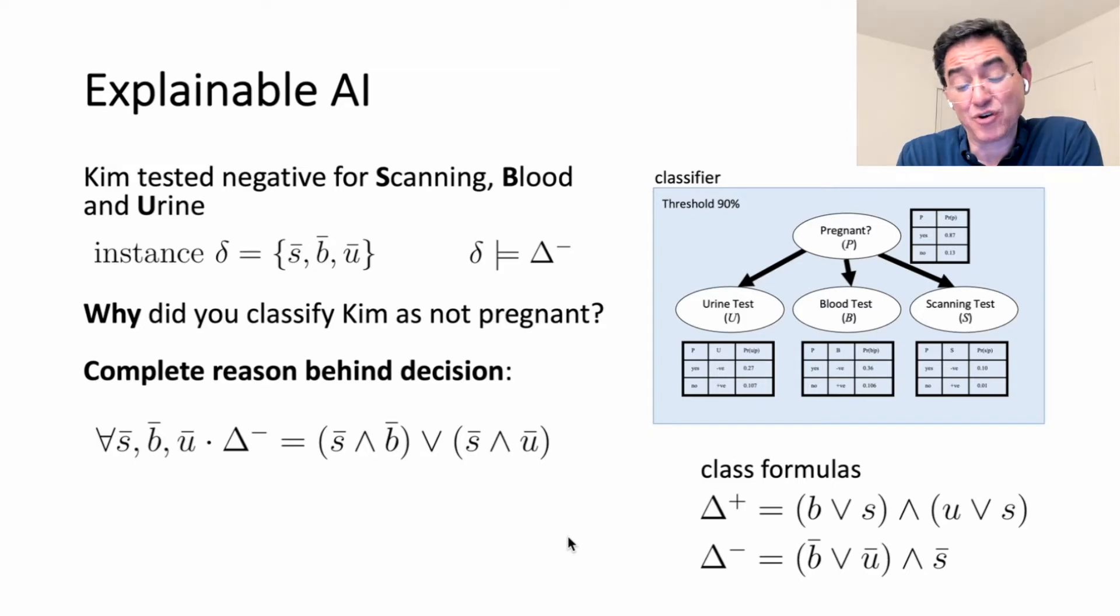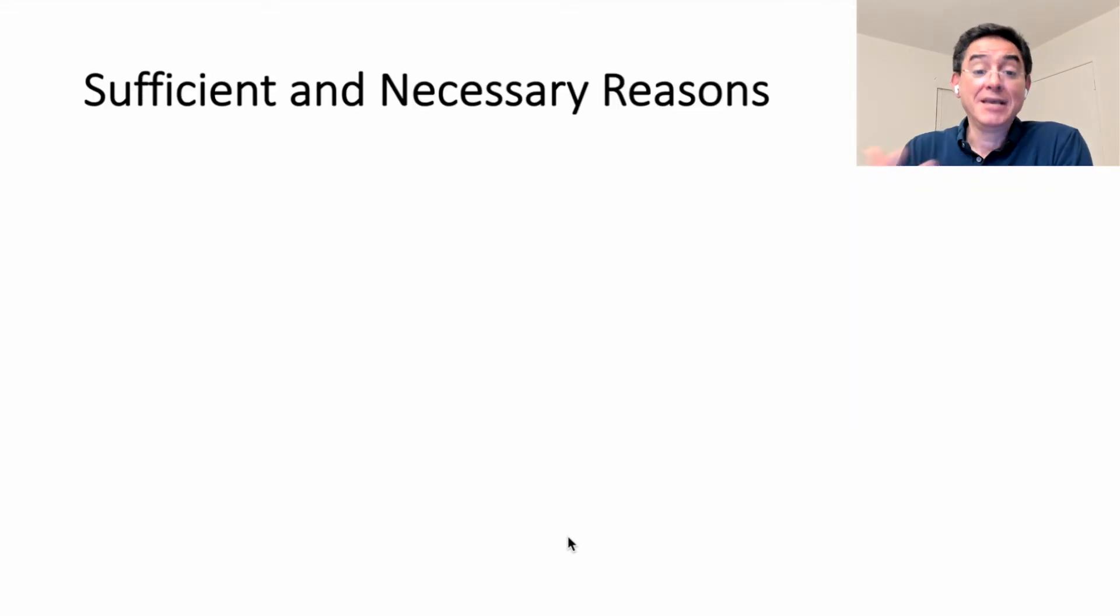You can see it's a little bit more involved. It's telling us you can see two reasons why this classification was made. Scanning was negative and blood was negative. That's one reason. Another reason is scanning was negative and urine was negative. I did need scanning to be negative for this decision, but I did not need both blood and urine to be negative in this particular case.